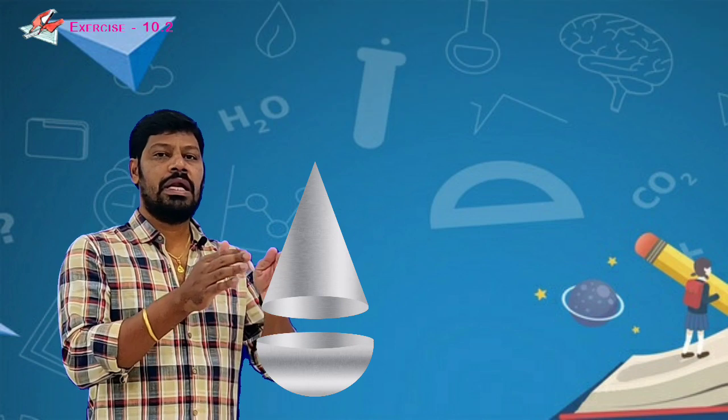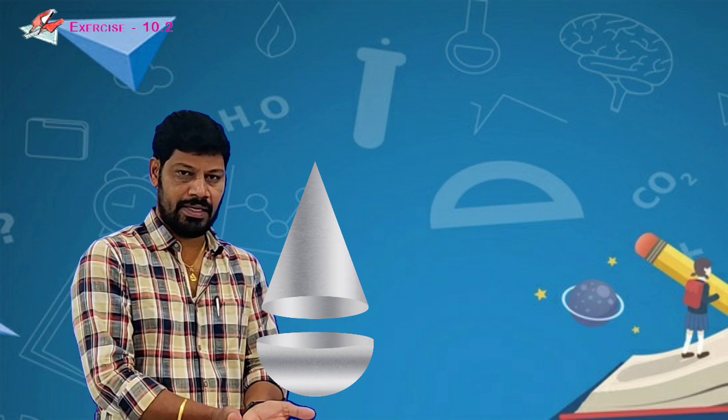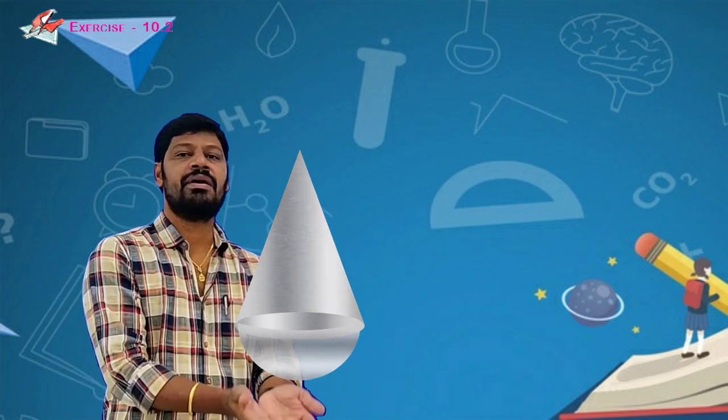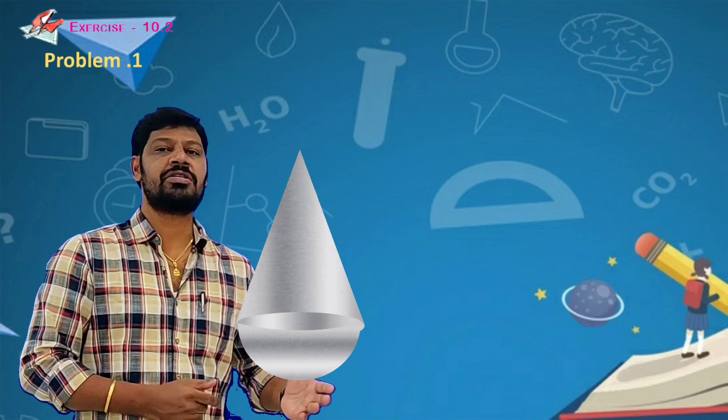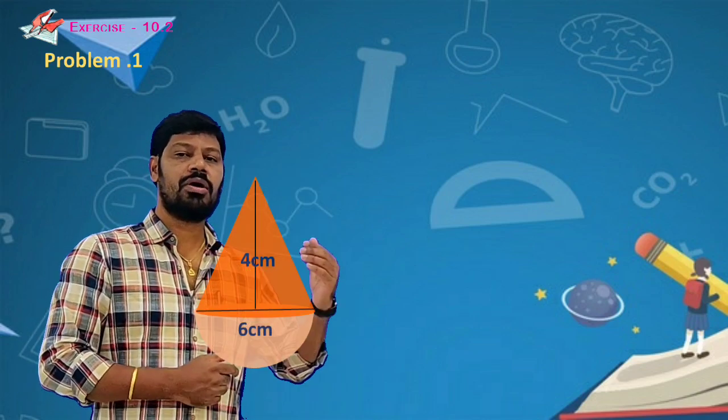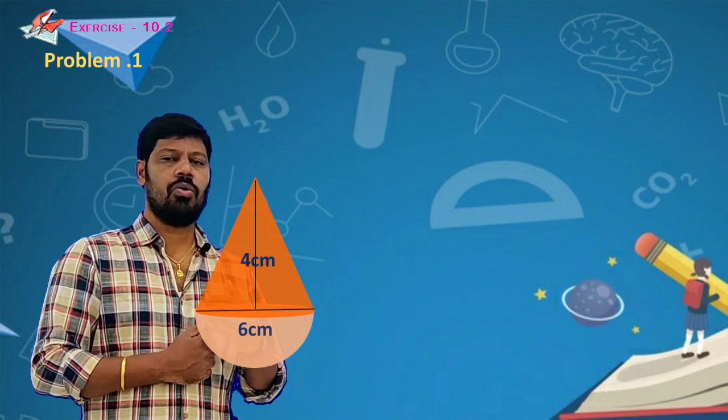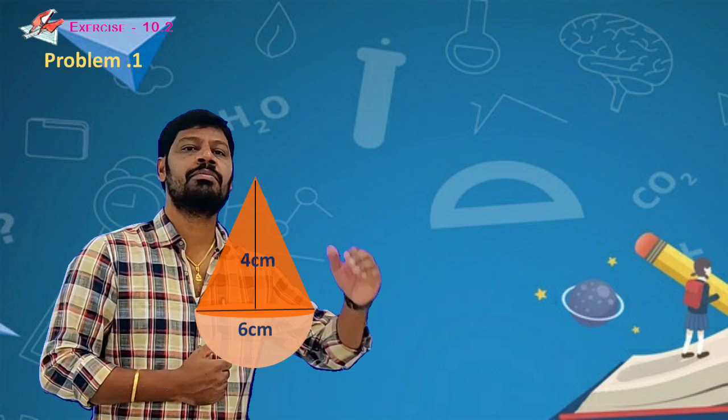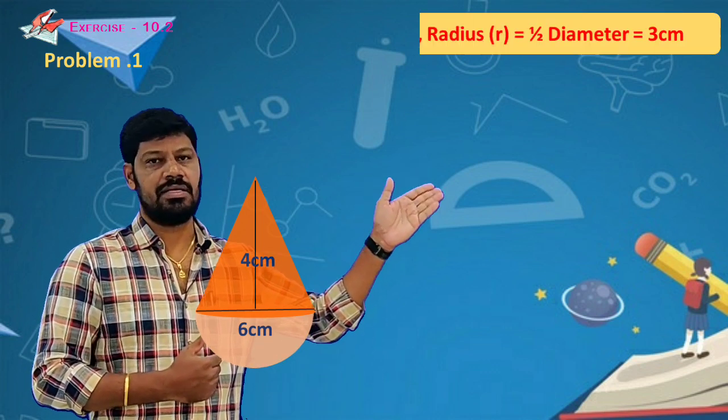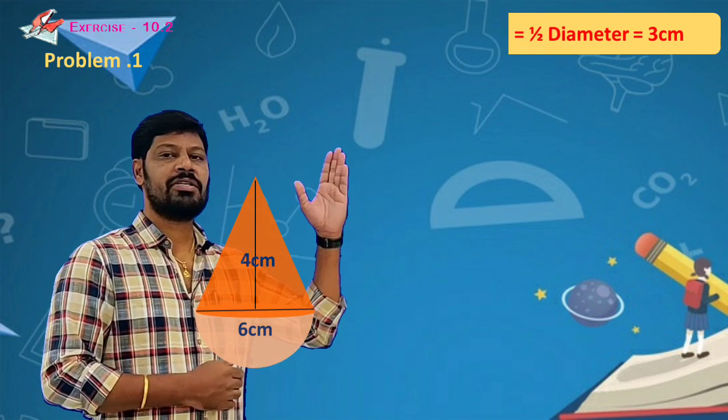One cone is mounted on a hemisphere. Clear information is that the cone diameter is 6 cm, so the radius is 3 cm. And the height of the cone is 4 cm. That is also mentioned.